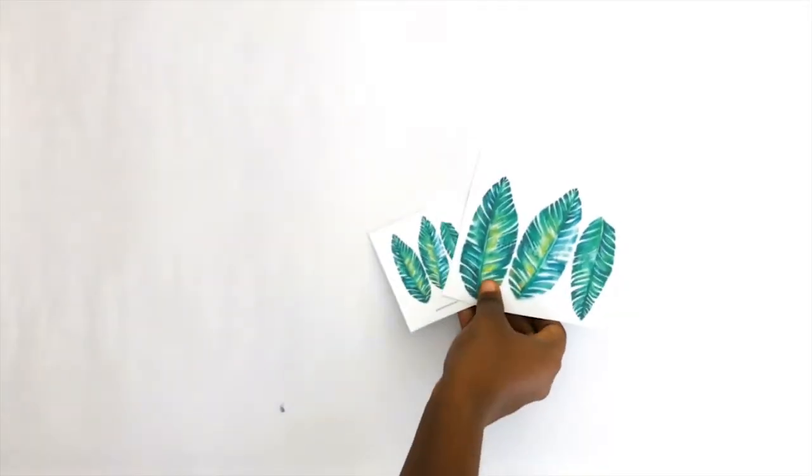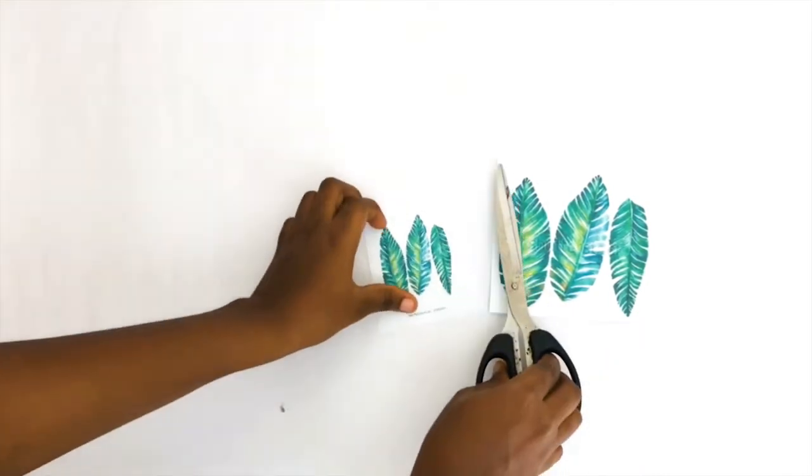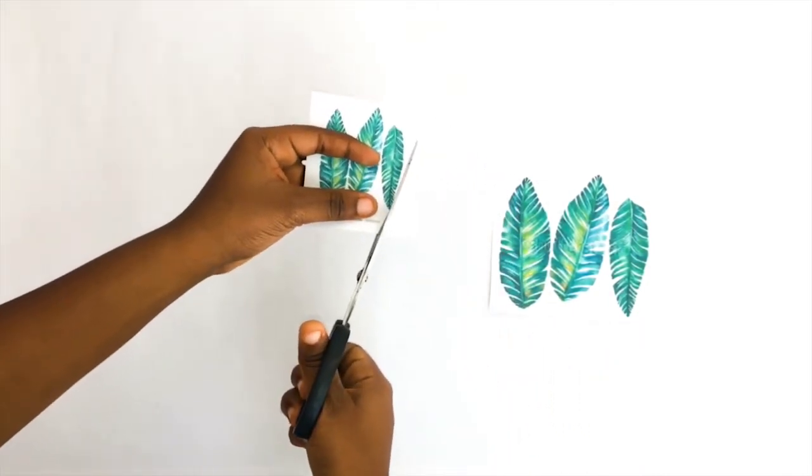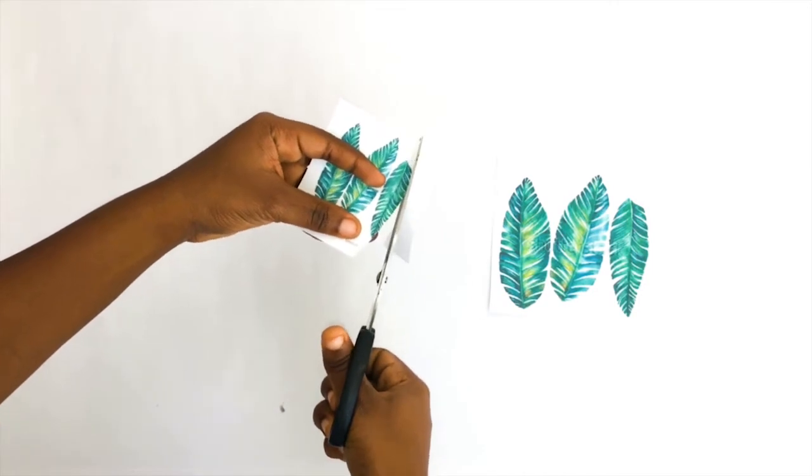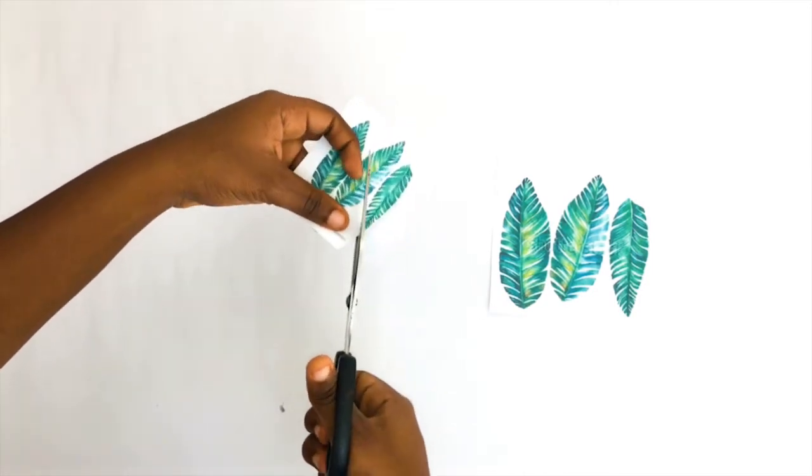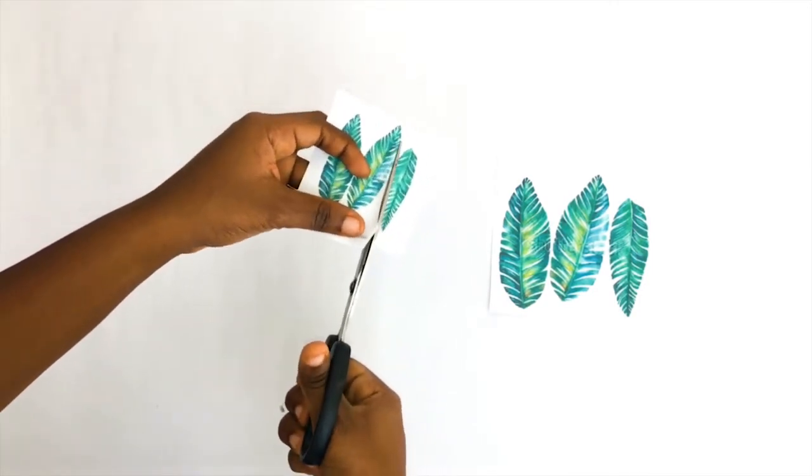You want to start by cutting out all the leaf images from the template. I'm also going to leave a link in my description box which contains all the templates I've used in this video, just in case you guys want to use the same designs as I did.